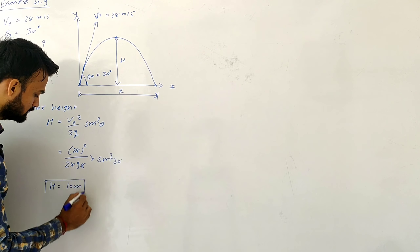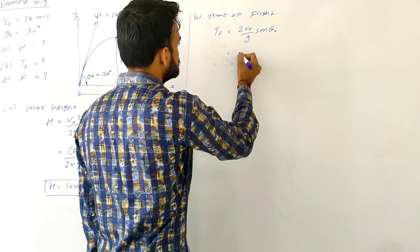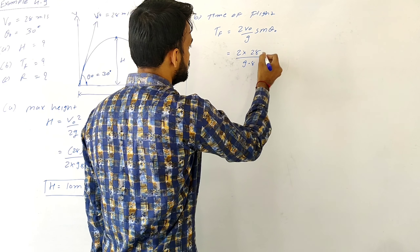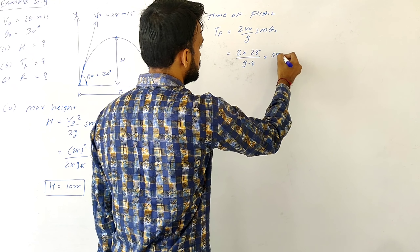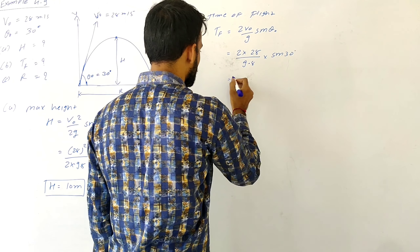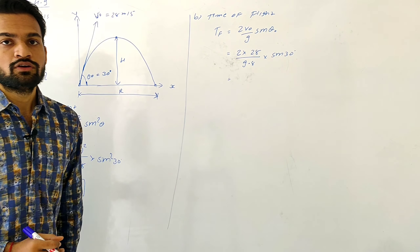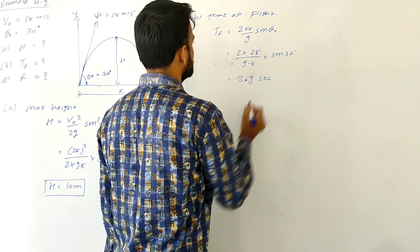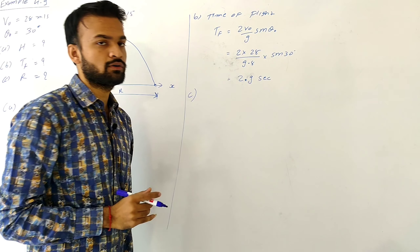In Part B, we have to find the time of flight. The equation is T = 2V₀ sinθ₀ / g. So it is 2 × 28 / 9.8 × sin(30°). On simplifying this term, you will get the answer: 2.9 seconds.